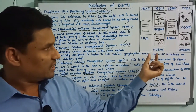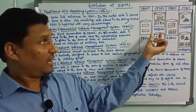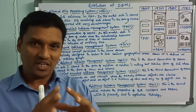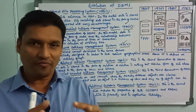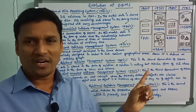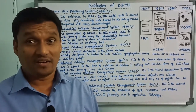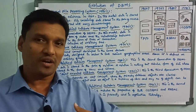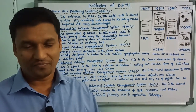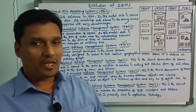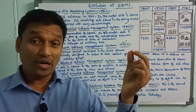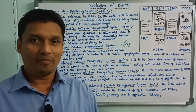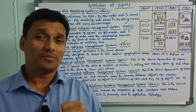Diagrammatically, comparing NDBMS with hierarchical DBMS: in hierarchical DBMS, data is stored in the form of nodes with a one-to-many relationship. In network DBMS, data is also stored in the form of nodes but supports many-to-many relationships.